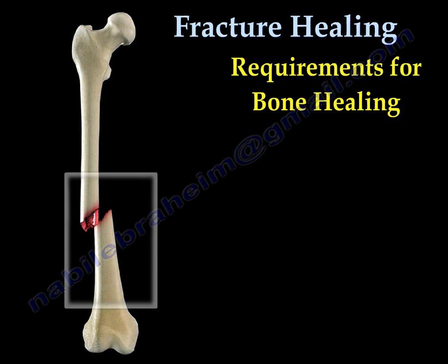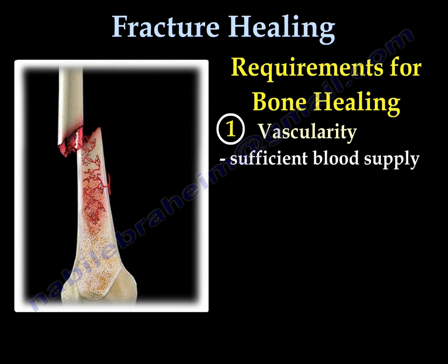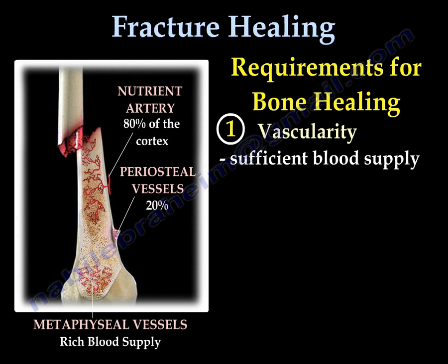Requirement for bone healing number one is vascularity. That means you need sufficient blood supply. The nutrient artery supplies 80% of the cortex, and the periosteal vessels supply the outer 20% of the cortex. The metaphyseal vessels have a very rich blood supply, which is why the metaphyses heal faster.